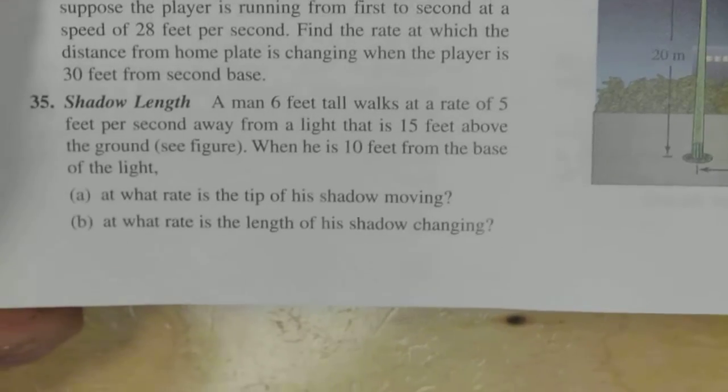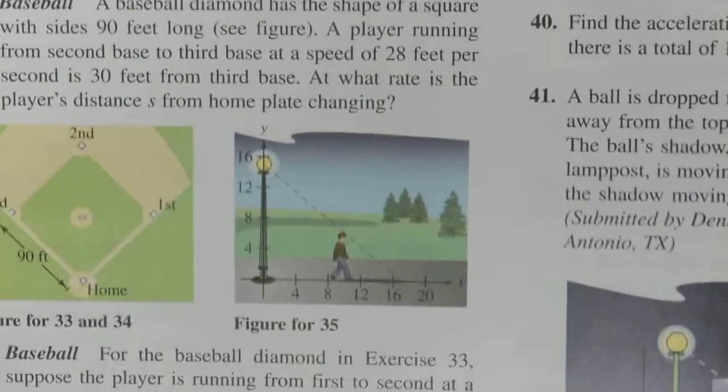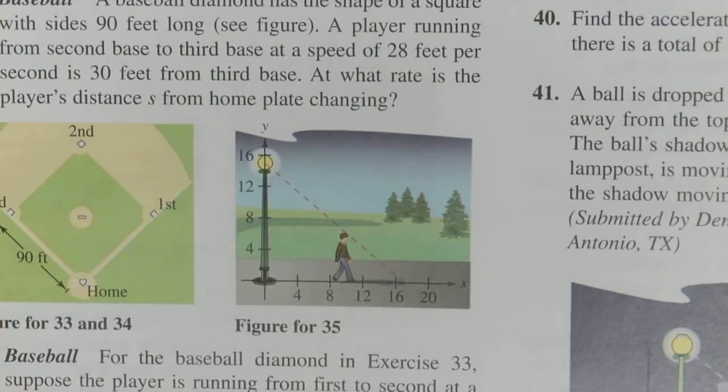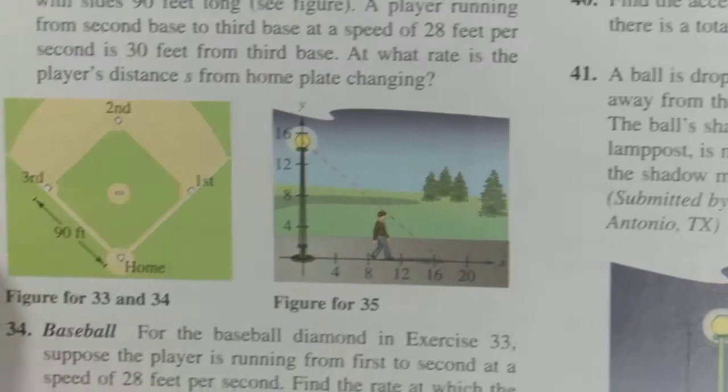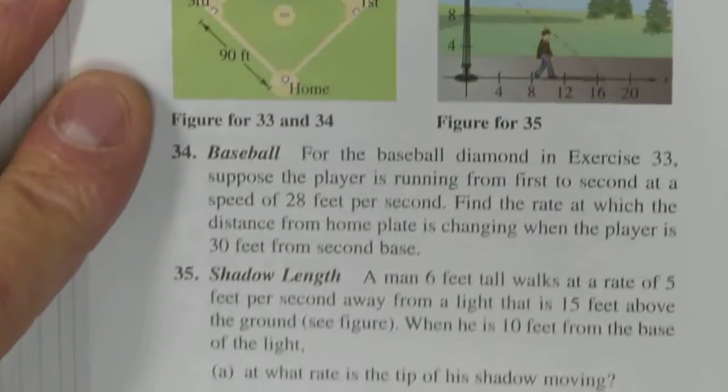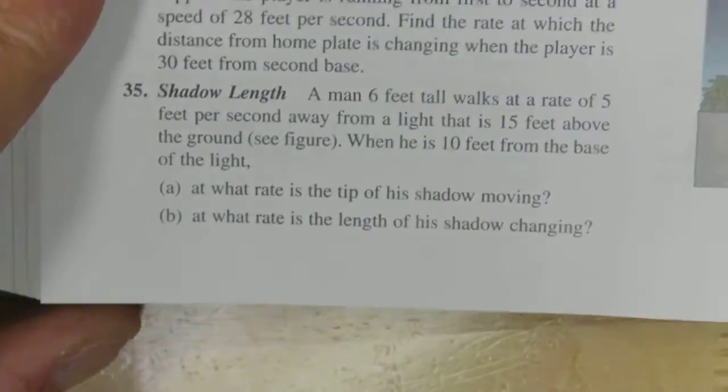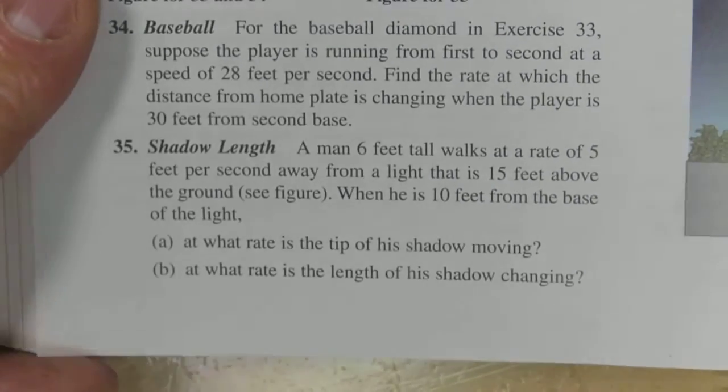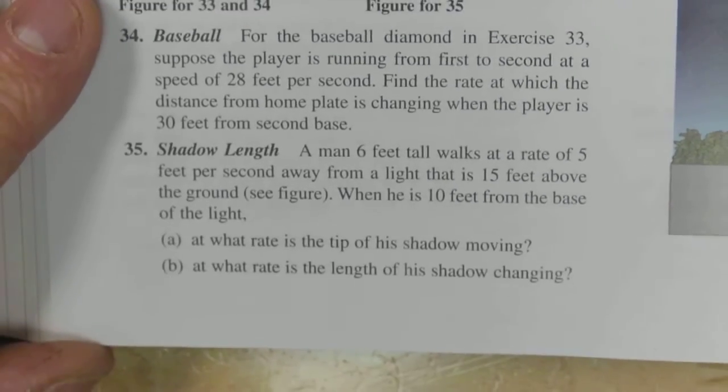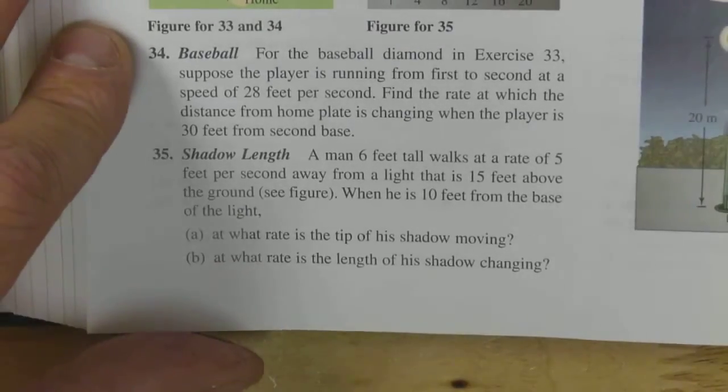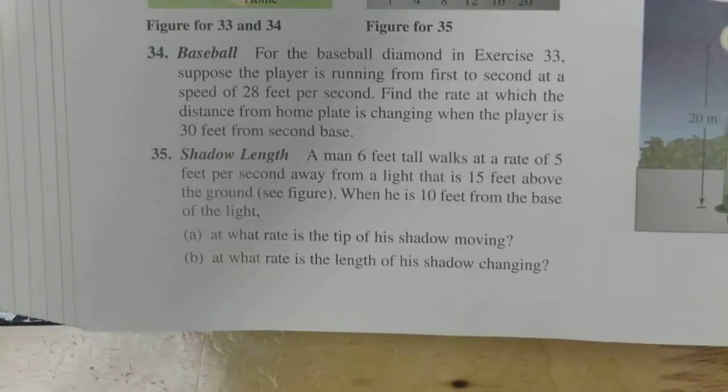But I am going to give you a couple review problems here from this book. Let's see how 33 goes, no, 35. The drawing for 35 is right here. And the problem for 35 is right here. I think this is a little bit different setup than we had before but I'm trying to make sure we've got enough practice with this. Yes, because this one's walking away from the light bulb.